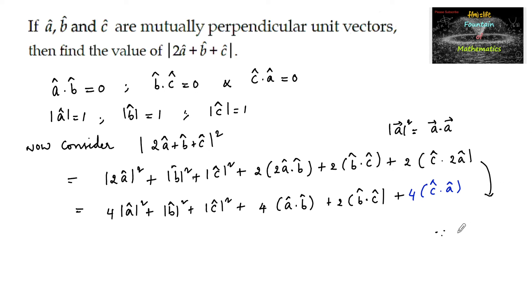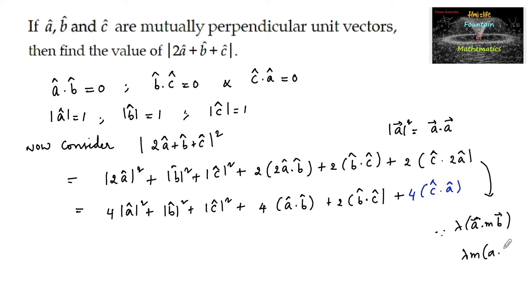The scalar multiplication property states: λ times of a · mb = λm times of a · b.